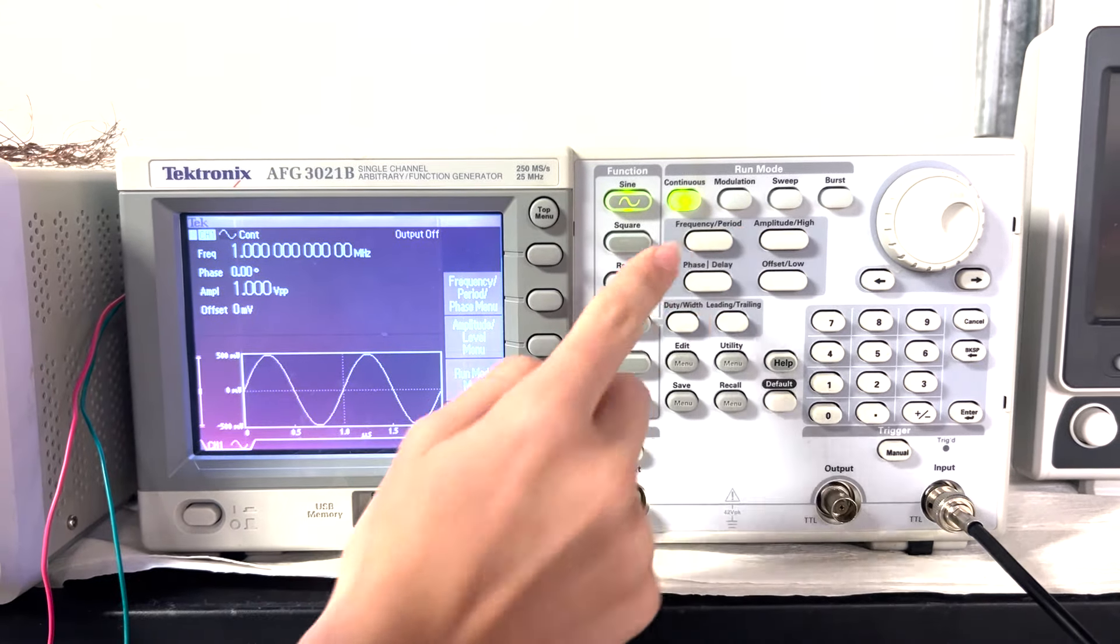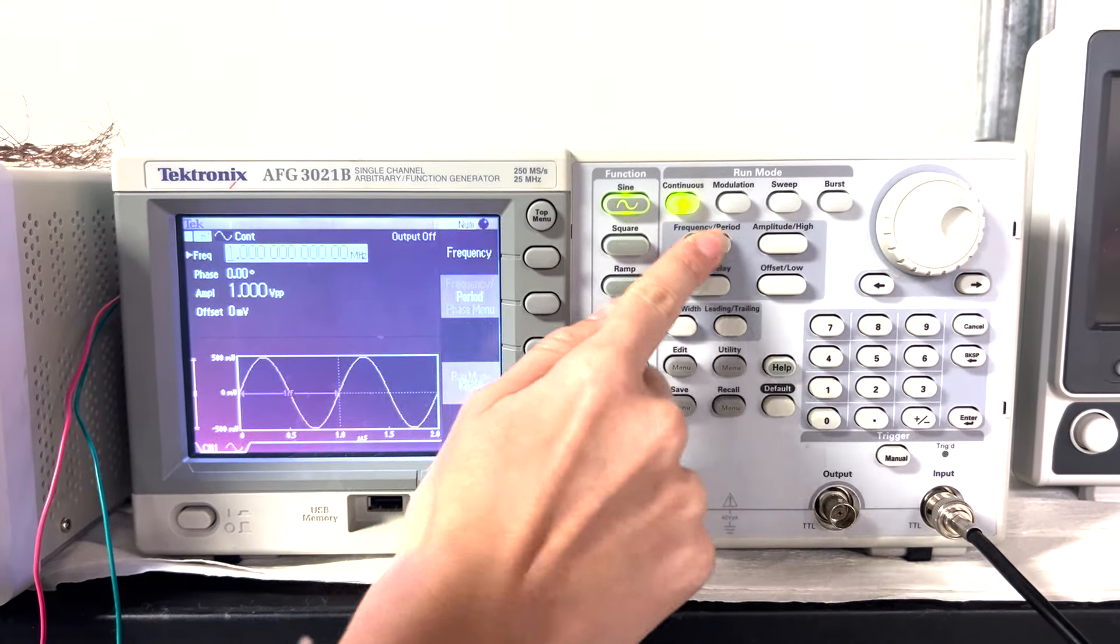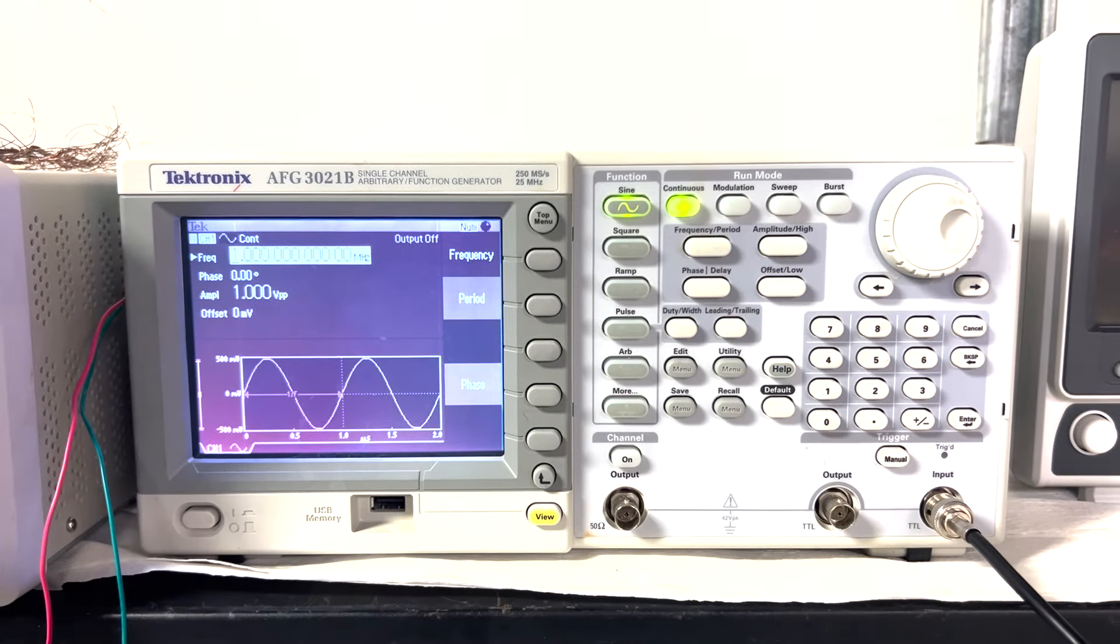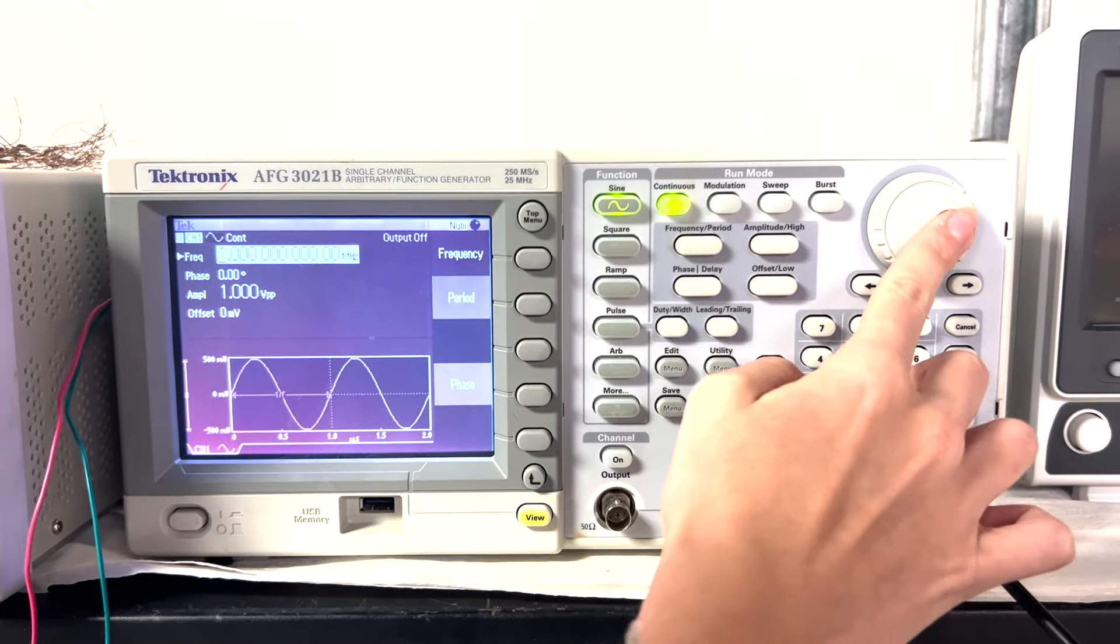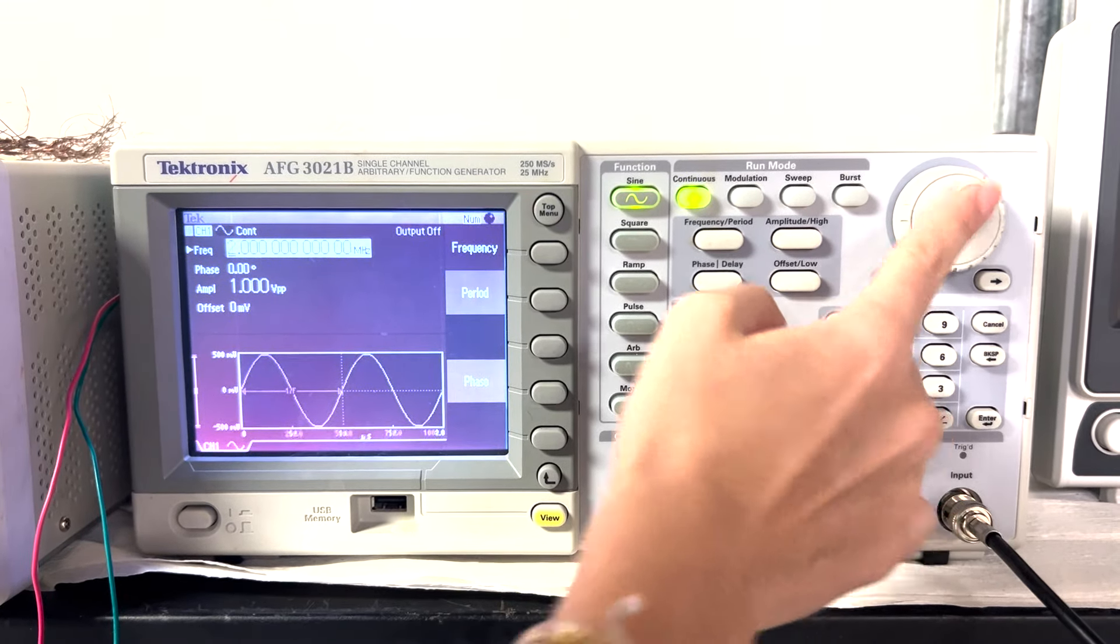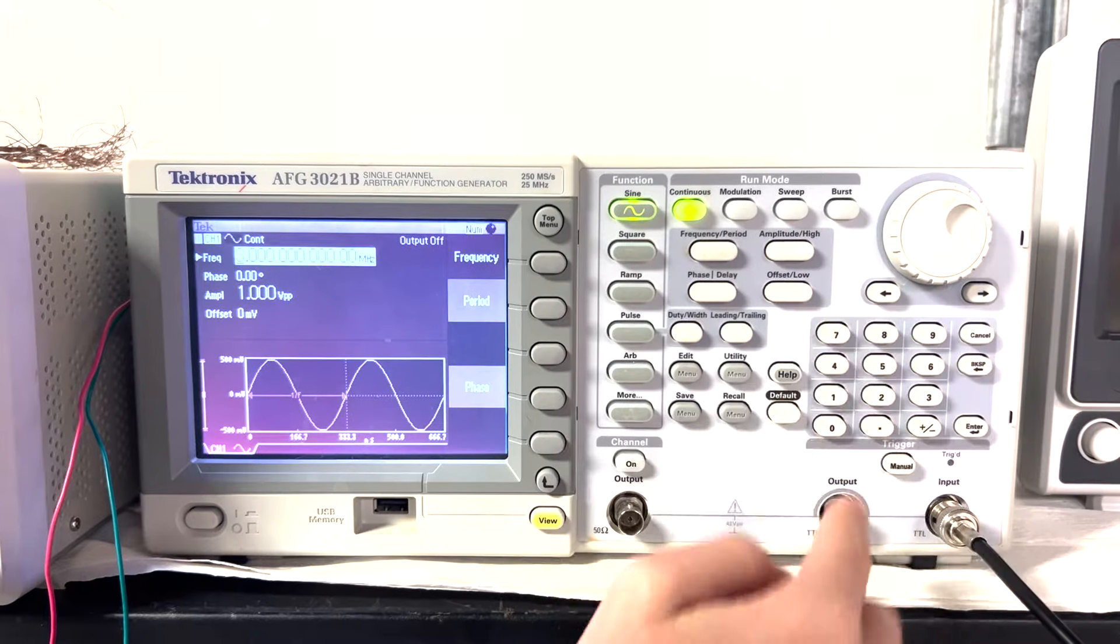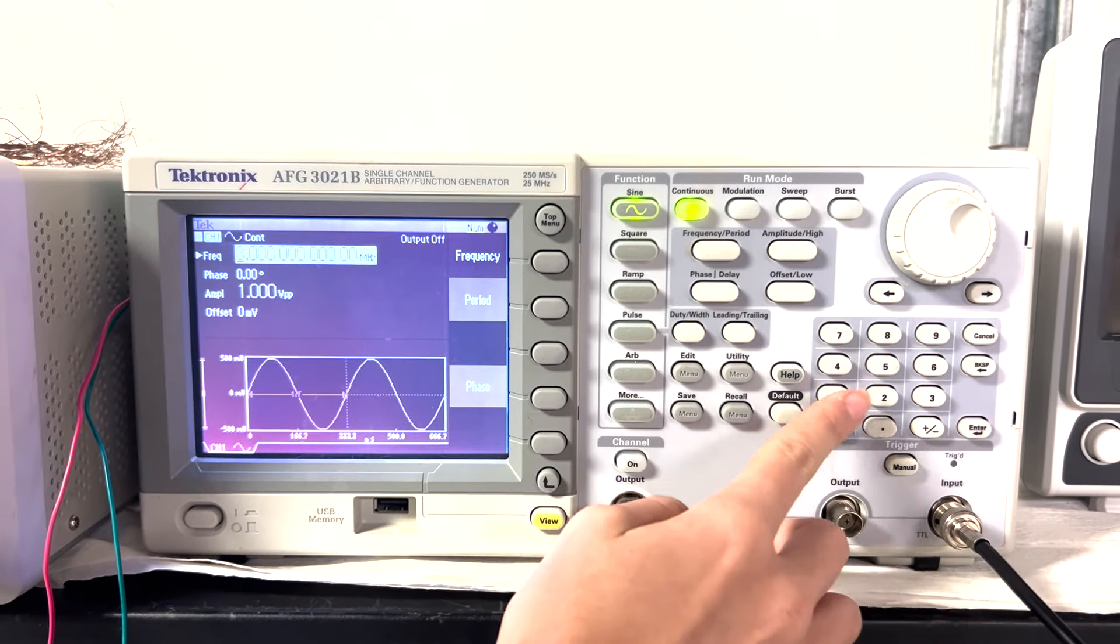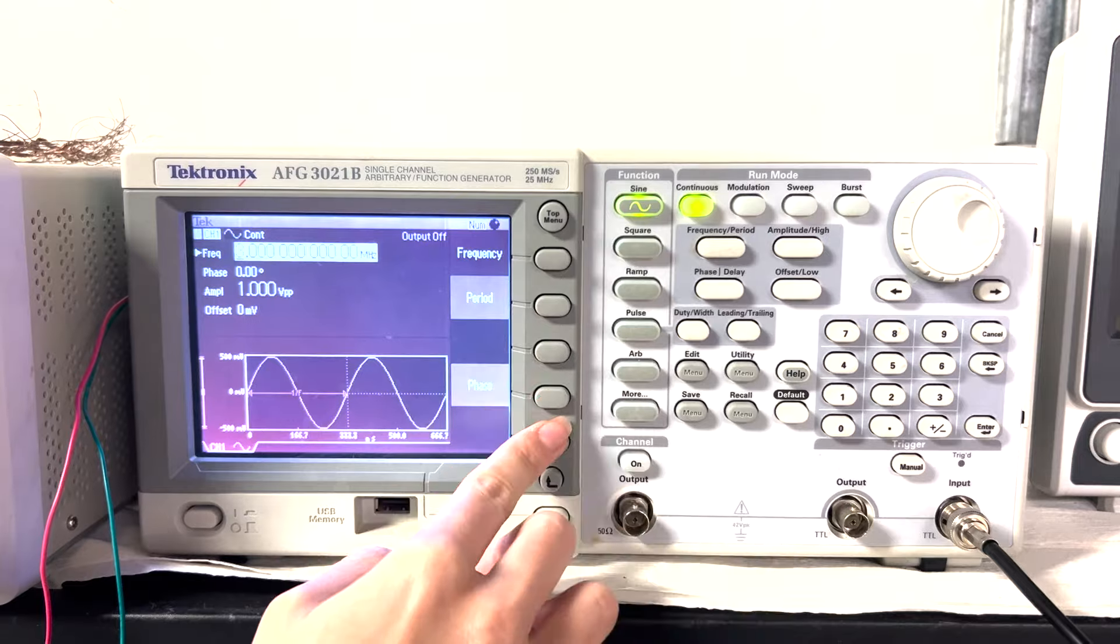So to change the frequency, you click the frequency button, and then you see how it selects. Then I can use this knob to increase or decrease whatever you have selected. Or you can use these numbers. I recommend using these numbers since you can change also the unit.